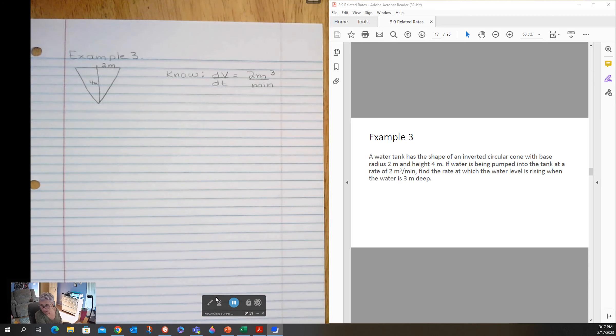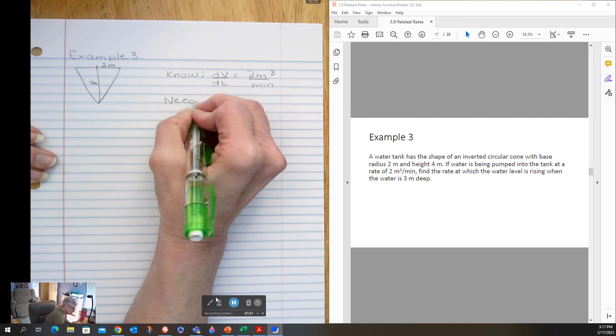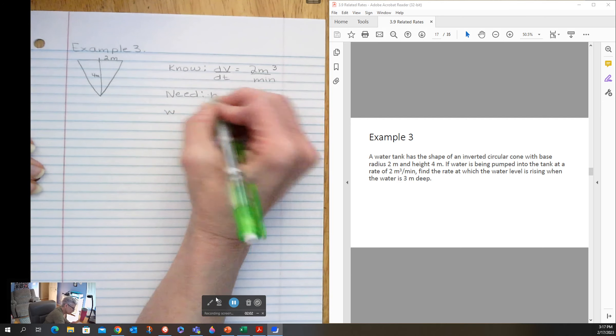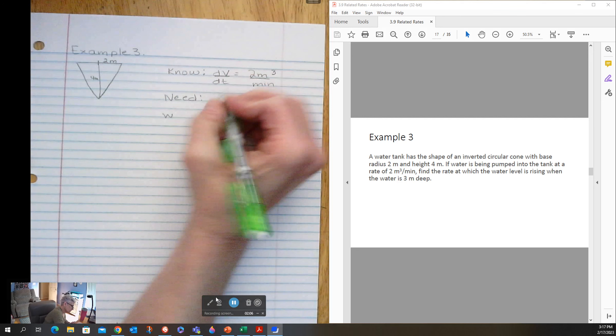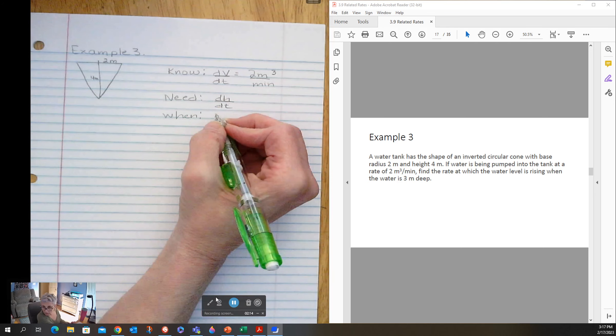Find the rate at which the water level is rising—that would be height. So dH/dt, not just H. dH/dt. And when water is three meters deep, so when H is equal to three. So let's relate.